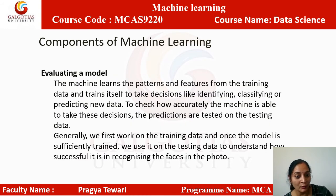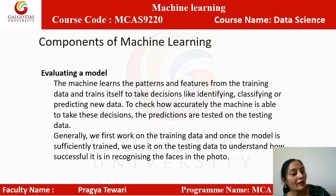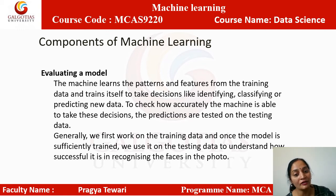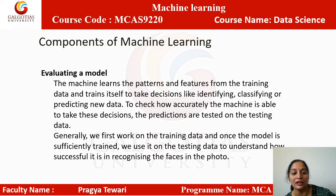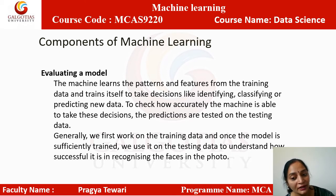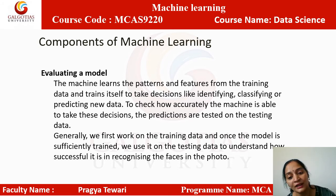The third component is evaluating the model. The machine learns patterns and features from the training data and trains itself to take decisions — such as identifying, classifying, or predicting new data. To check how accurately the machine takes decisions, the predictions are tested on testing data. We first work on training data, and once the model is sufficiently trained, we use it on testing data to understand how successfully it recognizes faces in photos.